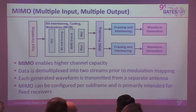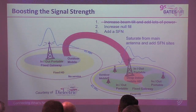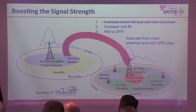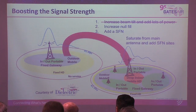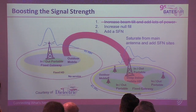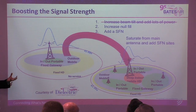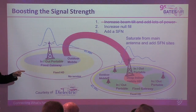Regarding STL link delay and its effect on SFN timing: there's a concept called maximum network delay. Through network planning you identify the longest STL path and its latency, then all other transmitters are buffered or delayed at the exciter to match, so everything is emitted at the same time.